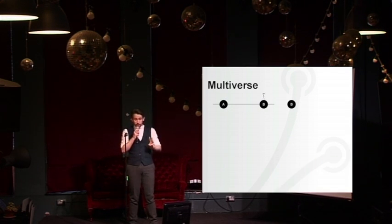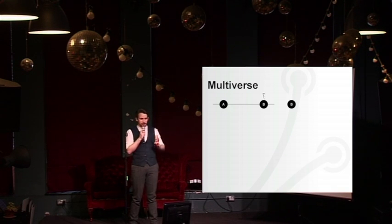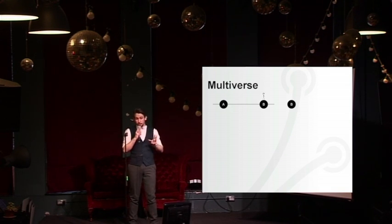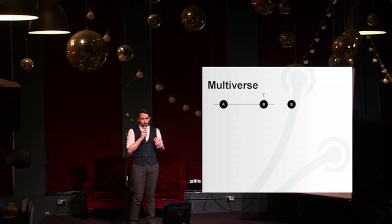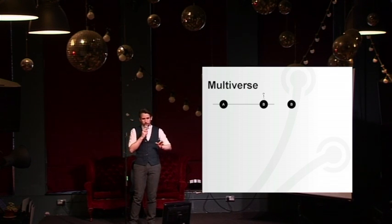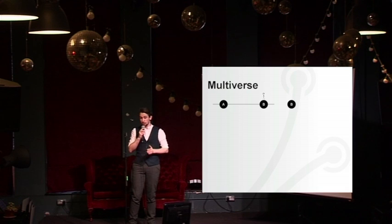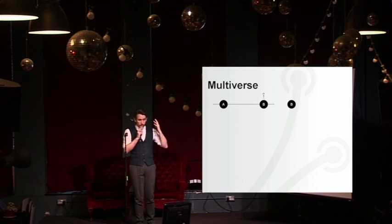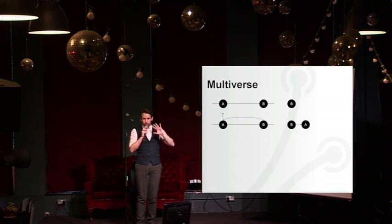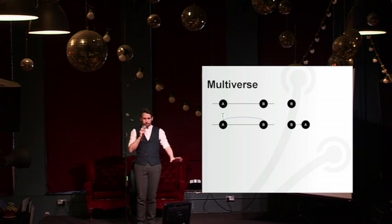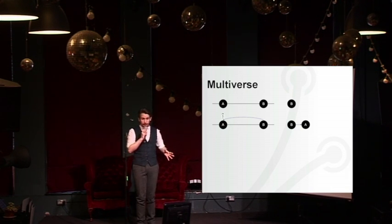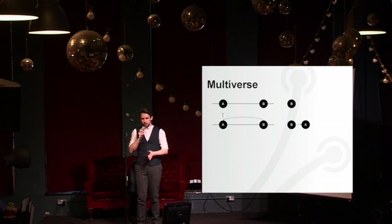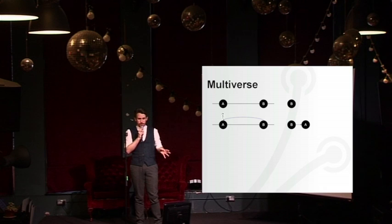Type number three is probably the most realistic in terms of what we actually know about science, and that's what's called a multiverse. So you travel back in time, you change something, but in doing so you create a new parallel timeline to the one you left. Your old timeline continues to exist, so you avoid the whole paradox problem. You can't erase yourself from existence because everything that happened before still happened, but you have a new timeline to travel forward on that has all of the effects of whatever it was you tried to change.